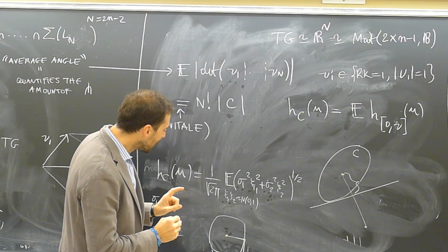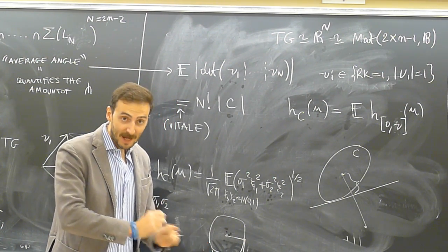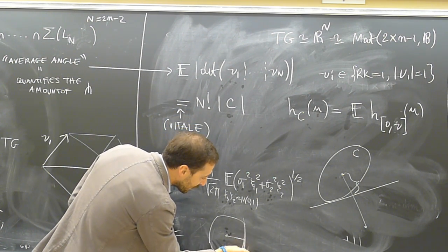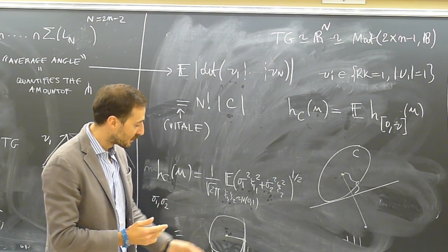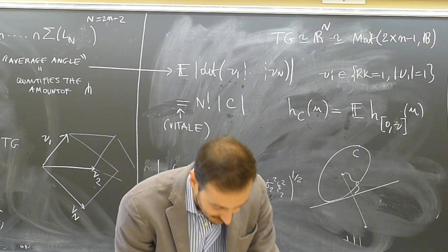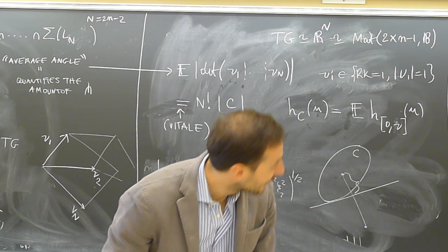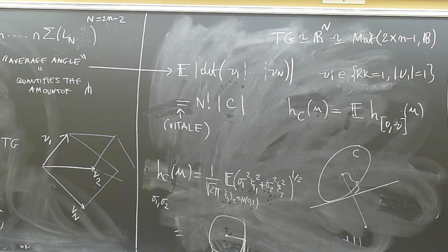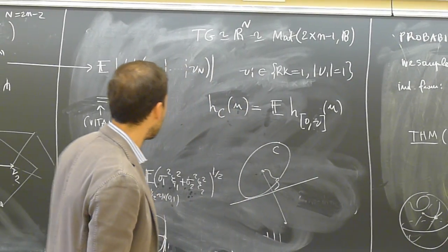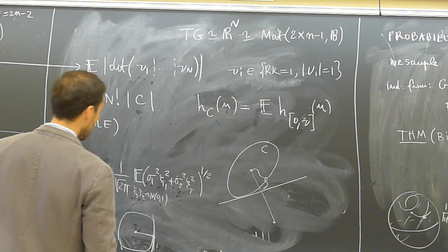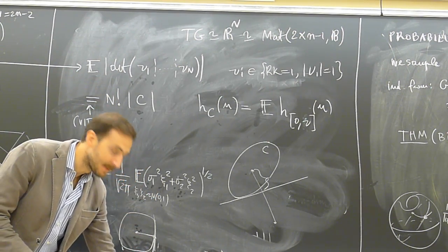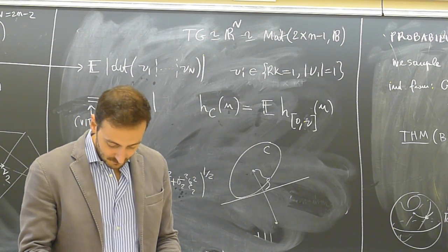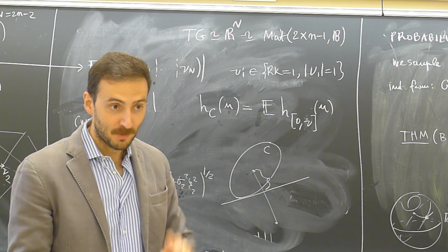The tricky part is that we have the support function, not the radial function, so we have to invert a power series. But Laplace's method is very powerful because you only need an approximation at a point to get asymptotics, and approximating the convex body at a point is manageable. In all cases — the Grassmannian of k-planes in R^n — you get a convex body whose support function is some type of elliptic integral, and the volume can be computed because the radial function is a radial function of a fixed-dimensional convex body raised to a large power.